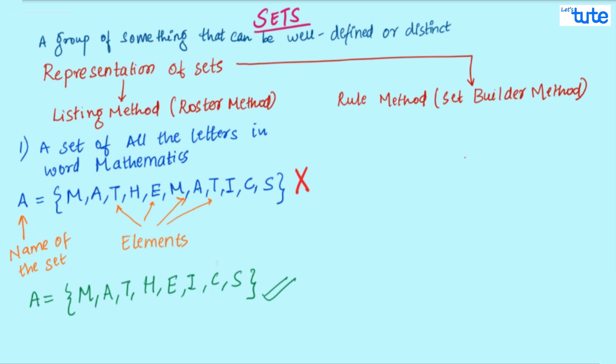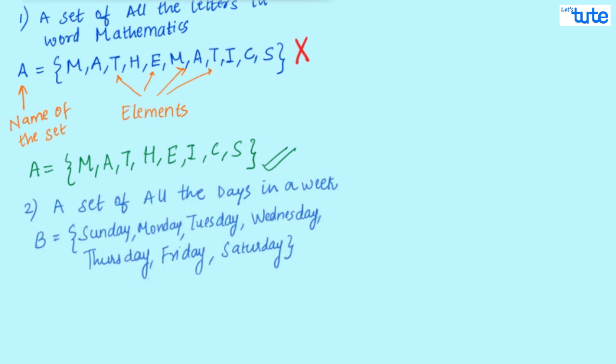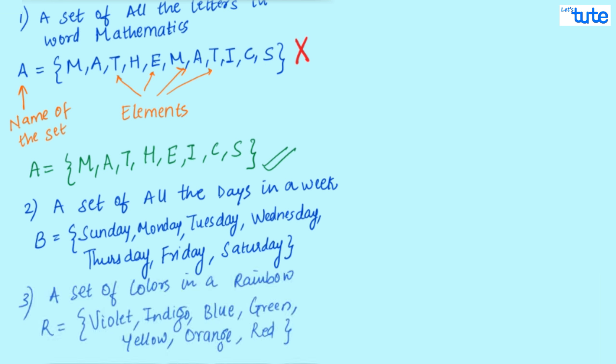This is how we present a set in a roster method or a listing method. Now, since just we have listed all the letters is the reason why it is known as a listing method. Next can be a set of all the days in a week, a set of all the rainbow colors, etc.